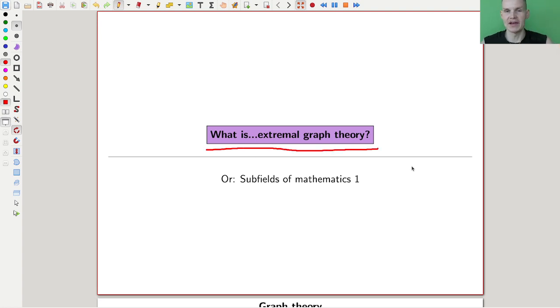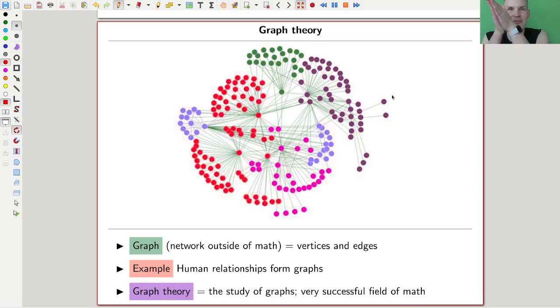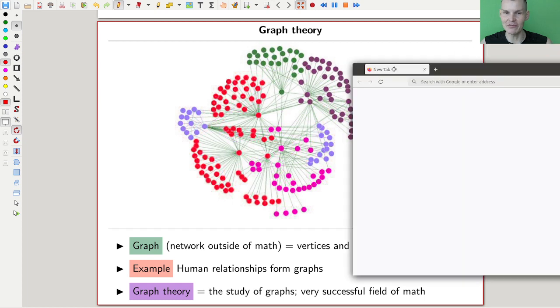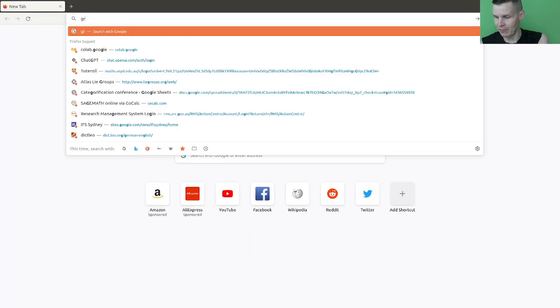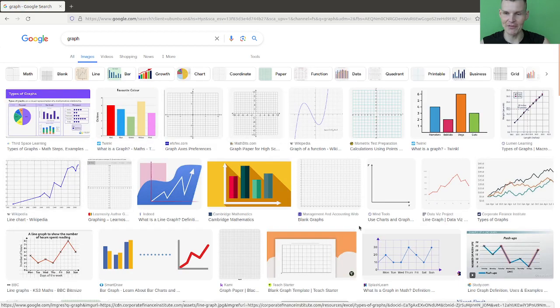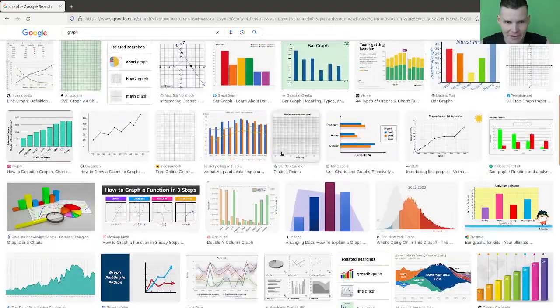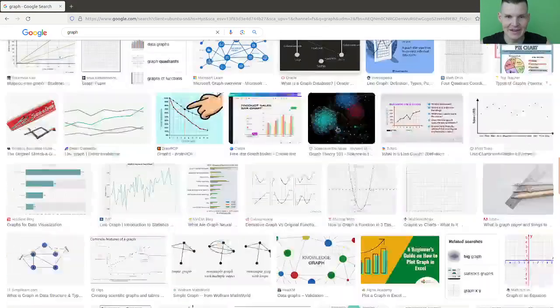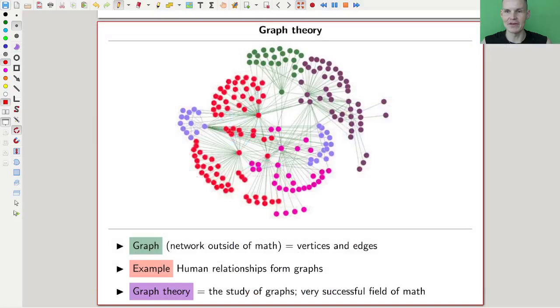The first thing I would like to consider is what people call extremal graph theory. Of course, it starts with graph theory, and everyone here probably knows what graph theory is. Let me just say the following: graph theory is completely misnamed because everyone except mathematicians gives graphs the correct name of networks, because there's just too many things named graphs.